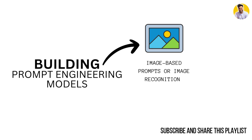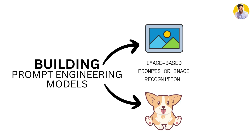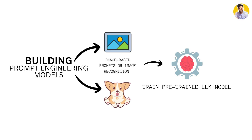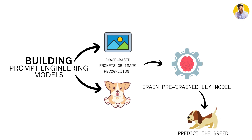For instance, let's say you want to build a prompt engineering model that can identify different breeds of dogs from pictures. In this case, we'll need to train a model on a dataset of images of dogs, with each image labeled with its corresponding breed. We can then use the pre-trained model to identify the breed of a dog in a new image.